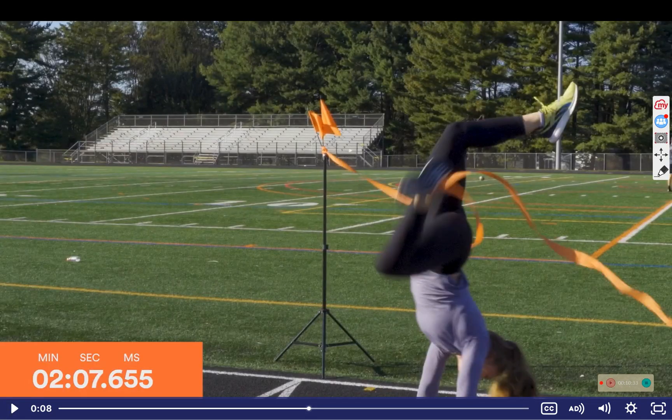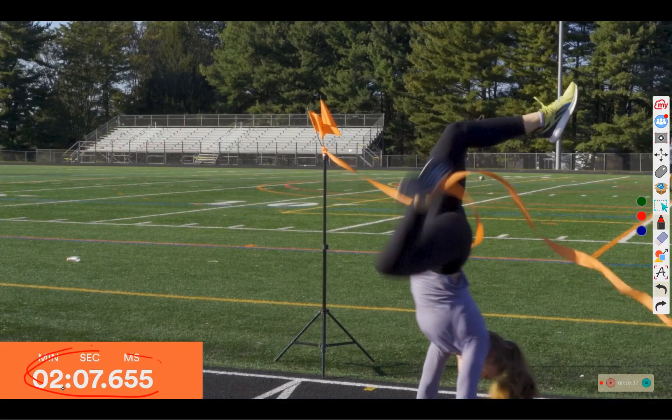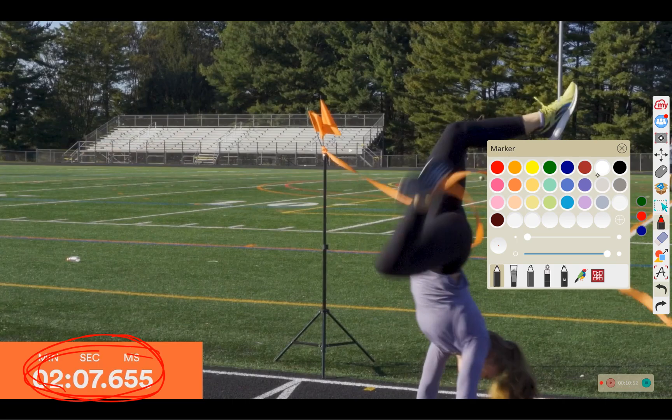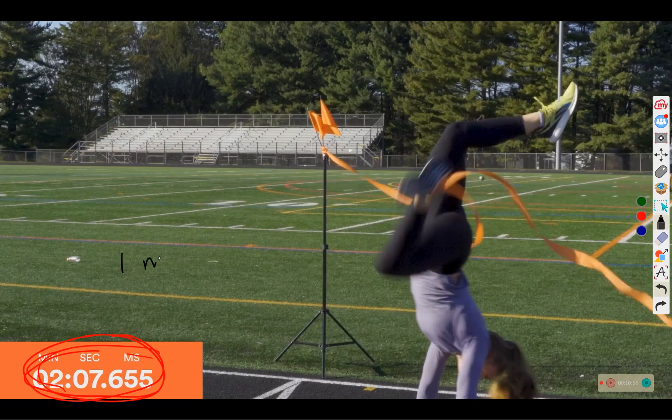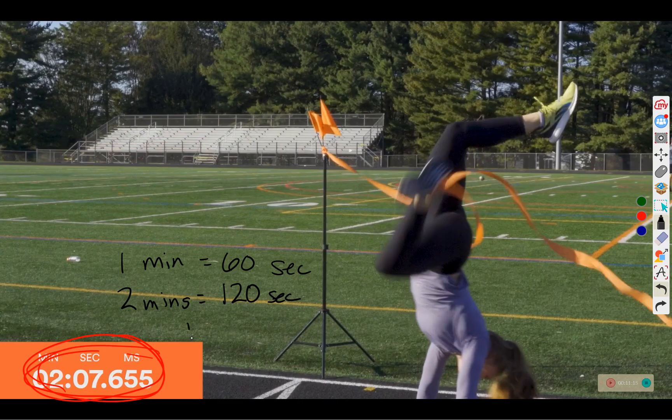We see that person one wins the race and person one completed it in two minutes and 7.655 seconds. We said it was going to take her 123.46 seconds. So were we close? A minute has 60 seconds. So 2 minutes, 60 times 2 is 120 seconds. So if she took 2 minutes and 7.655 seconds, that means her time to complete the race was 127.655 seconds. Our prediction was 123.46 seconds. So were we close?